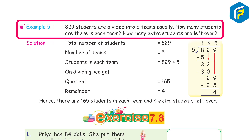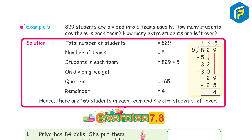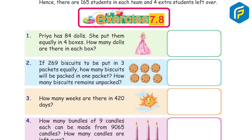Example 5: 829 students are divided into 5 teams equally. How many students are there in each team? How many extra students are left over? Solution: total students = 829, number of teams = 5. 829 ÷ 5 gives quotient 165, remainder 4. Hence, there are 165 students in each team and 4 extra students left over.